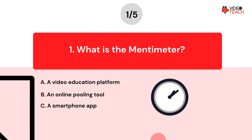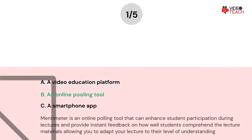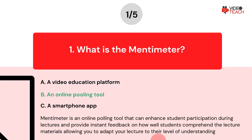Now you have about 15 seconds to think about your answer. The correct answer is option B. Mentimeter is an online polling tool that can enhance student participation during lectures and provide instant feedback on how well students comprehend the lecture materials, allowing you to adapt your lecture to their level of understanding.